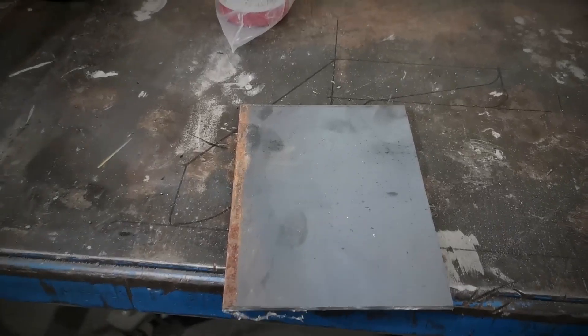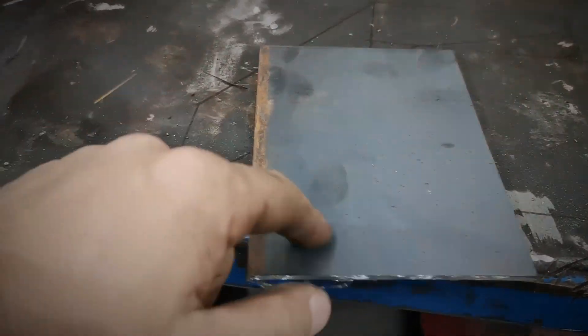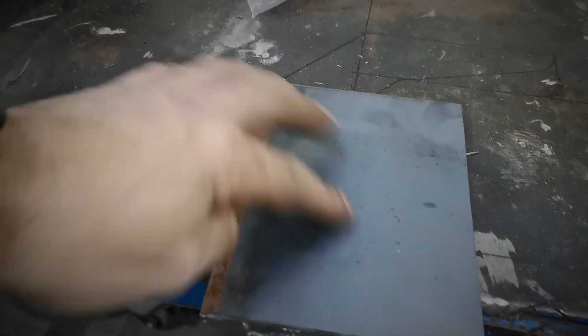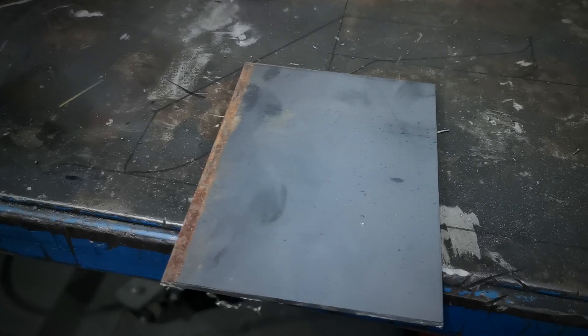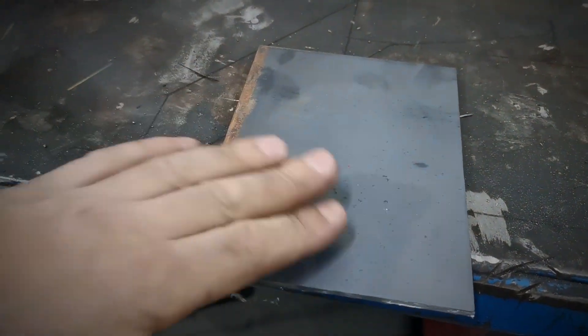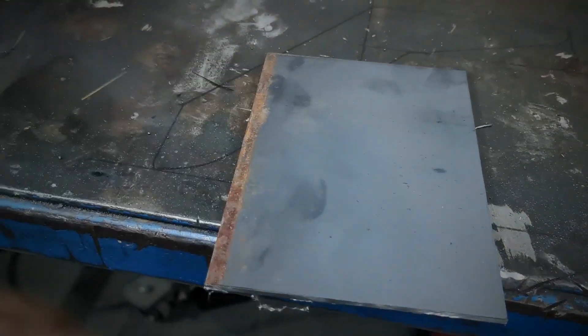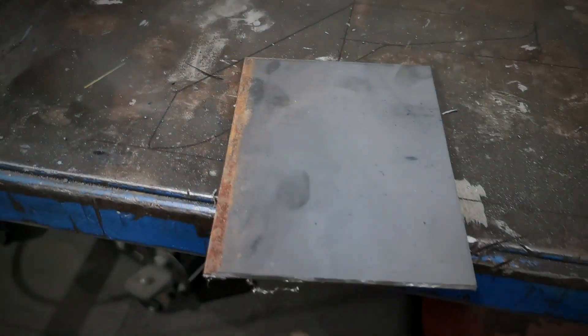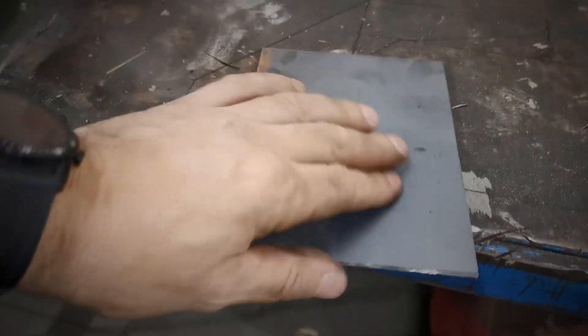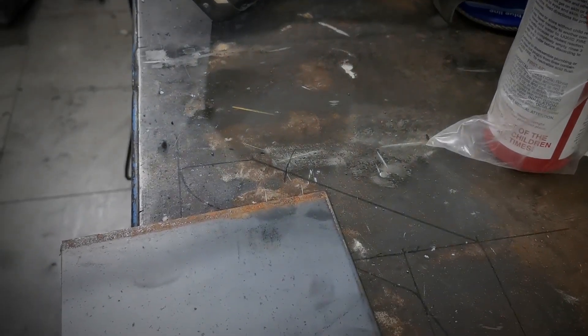All right guys, so quick video on how to clean up the mill scale off sheet metal. You've got two options. Mill scale is caused when they create the metal in the foundry, so it's just a black horrible coating. You can't grind it off—there's only really, well, you can try and grind it, but all you're going to get is this.